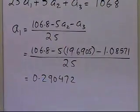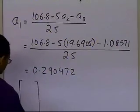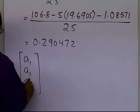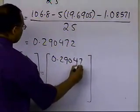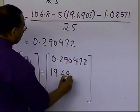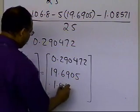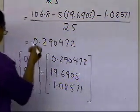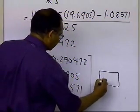So we have been able to calculate all the unknowns. Writing down the solution vector: a1, a2, a3 equals 0.290472, 19.6905, and 1.08571. That's the solution we obtain for the three equations and three unknowns by using the back substitution part of the naive Gaussian elimination algorithm. And that is the end of this segment.